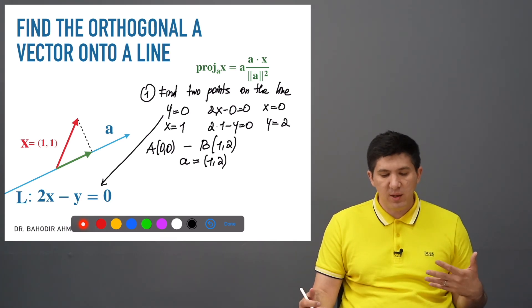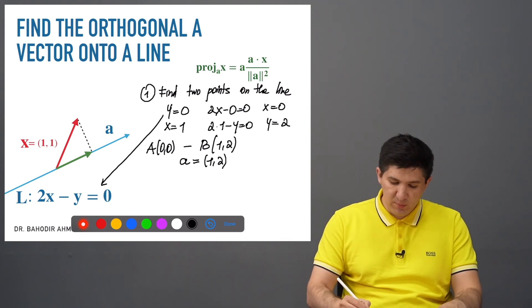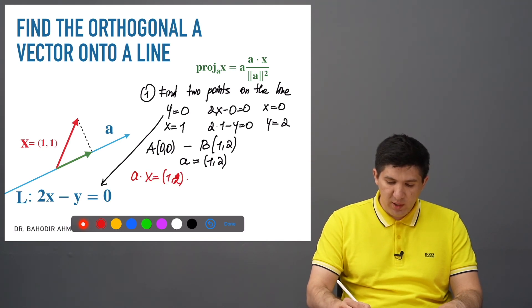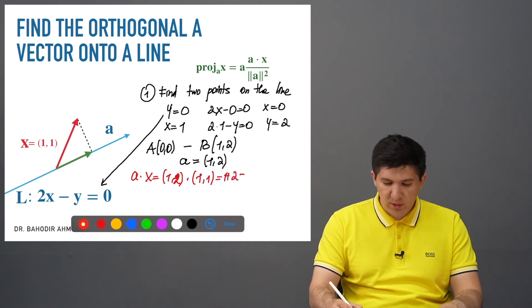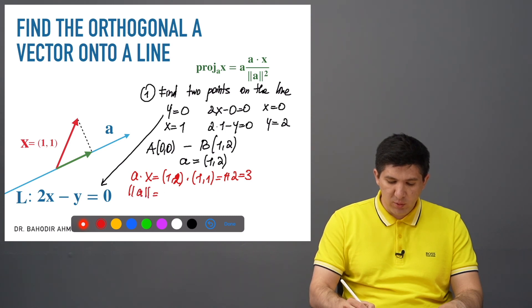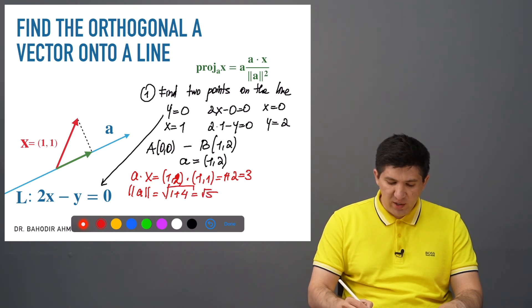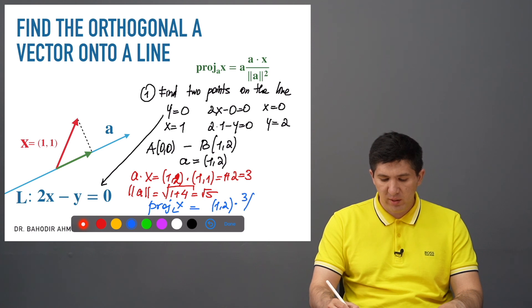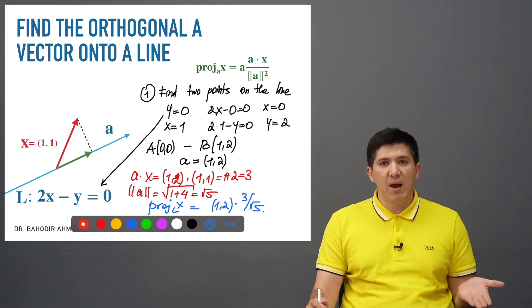Now we substitute everything into the projection formula and find its components. First, I compute the dot product of a and x: (1, 2) times (1, 1), which gives 1 plus 2, equal to 3. Then the norm of a is the square root of 1 squared plus 2 squared, which is the square root of 5. The projection vector of x onto this line is therefore the vector (1, 2) times the constant 3 divided by the square root of 5. In this video lecture we've considered how to find the orthogonal projection of a vector onto a line when the line is given as a vector, or when it is given as an equation.